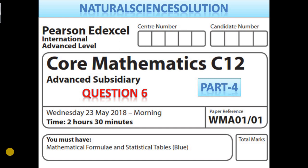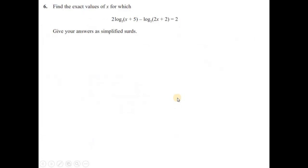It's all about question number six, so let's start. Find the exact value of x for which 2log₅(x+5) - log₅(2x+2) = 2. Give your answer as simplified surds.